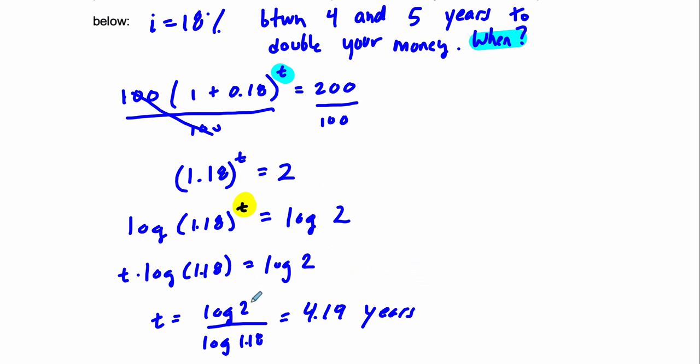So this does relate to the rule of 72, because there is a 72-ness in this ratio of logs, which we'll get to later. But that's where the rule of 72 comes from. It comes from the ratio, what we know about these logarithms. And we'll talk more about that. But I wanted to show you how to deal with this precisely. All right. Thanks.